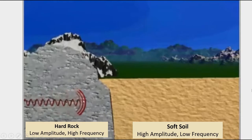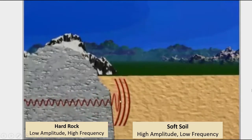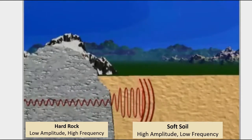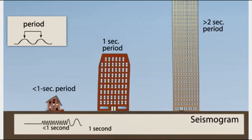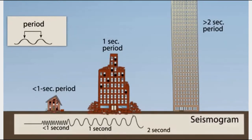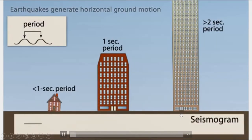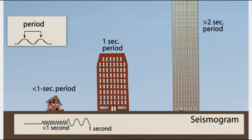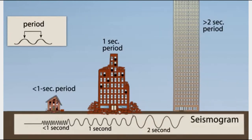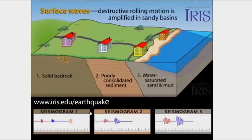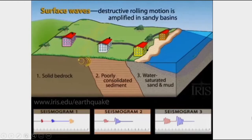Peningkatan amplitudo pada resonansi disebut dengan faktor amplifikasi. Amplifikasi terjadi apabila gelombang seismik merambat dari medium yang lebih padat atau keras ke medium yang lebih lunak. Semakin besar nilai faktor amplifikasi, maka semakin besar resonansi dan semakin rentan suatu wilayah mengalami kerusakan saat terjadi gempa bumi. Sebaliknya, semakin besar frekuensi natural, maka semakin resisten terhadap keguncangan. Yang perlu diwaspadai adalah lokasi yang memiliki faktor amplifikasi tinggi dan frekuensi natural yang rendah.